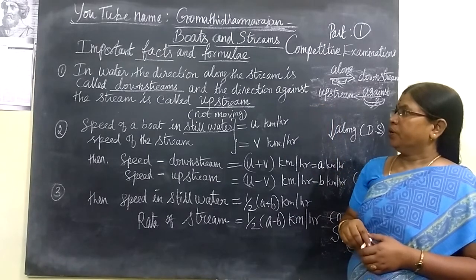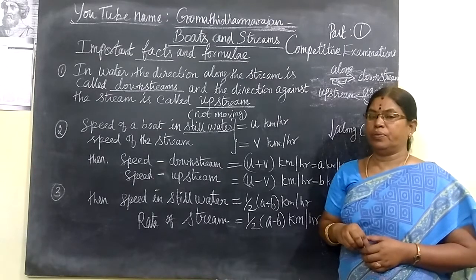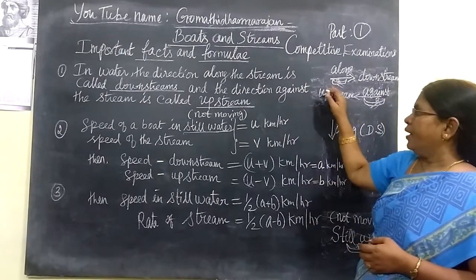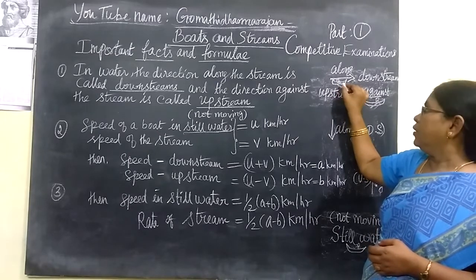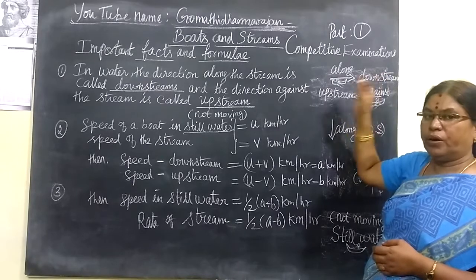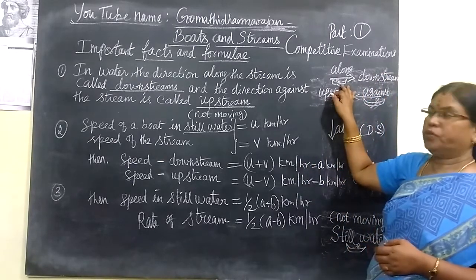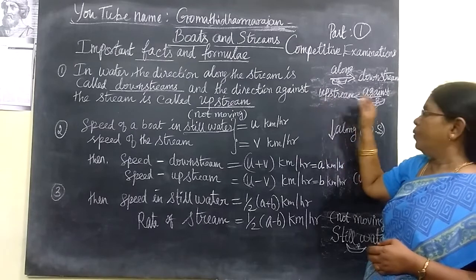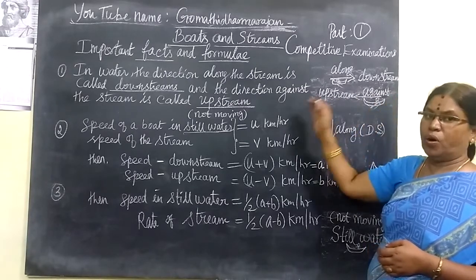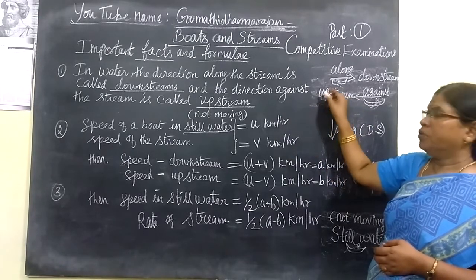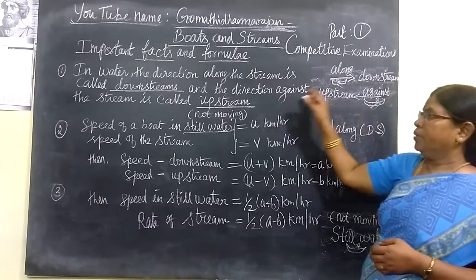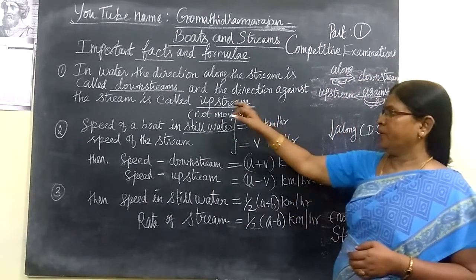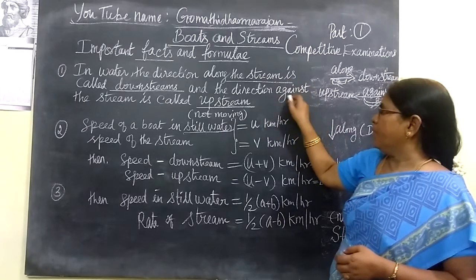In water, the direction along the stream is called Downstream. If the boat moves along the stream, that direction is downstream. Suppose if it moves against the stream, then that direction is called Upstream. So Downstream means along the stream, and Upstream means against the stream. This is very simple.